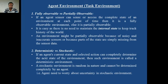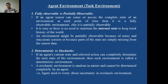An environment might be partially observable because of noisy and inaccurate sensors, or because parts of the state are simply missing from the sensor data. For example, in an autonomous car agent the environment is partially observable because the agent does not know what obstacles will appear after five minutes or what turns lie ahead. In contrast, for the vacuum cleaner agent, the agent knows everything about room A and room B — nothing is hidden — so it is a fully observable environment.